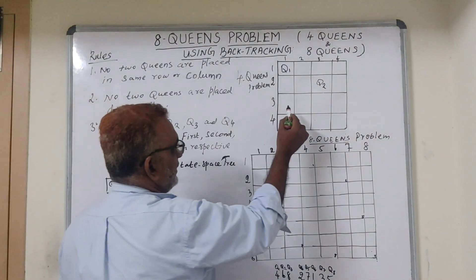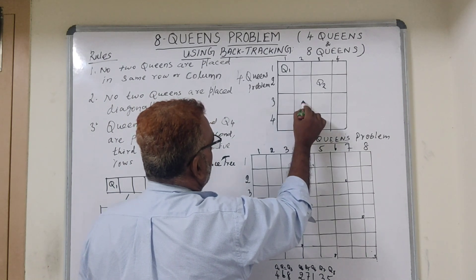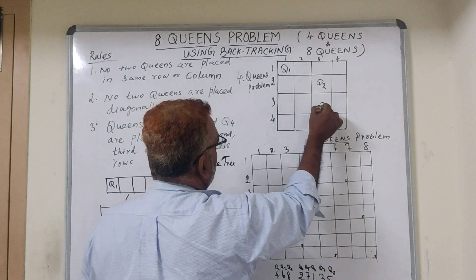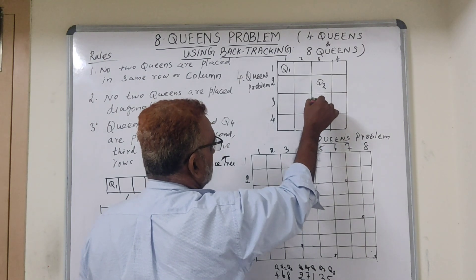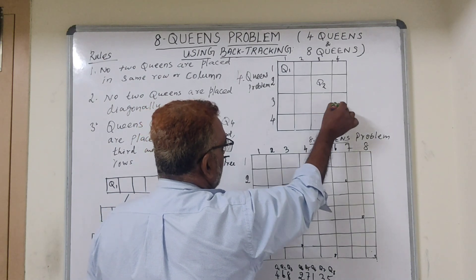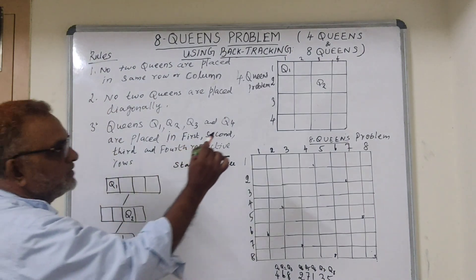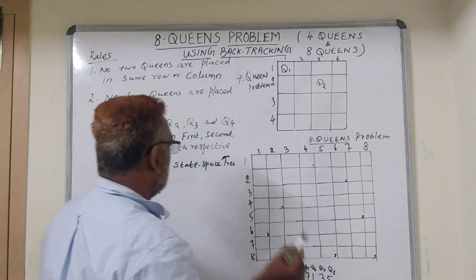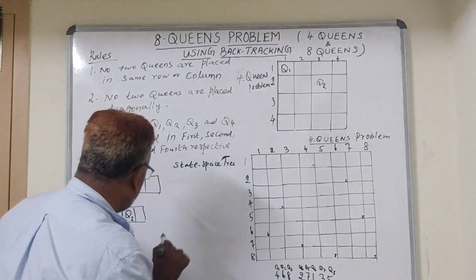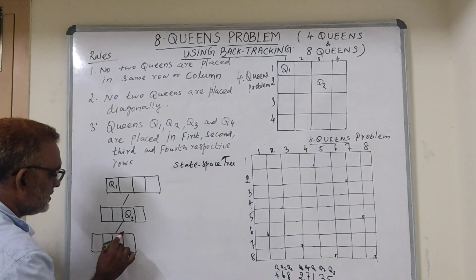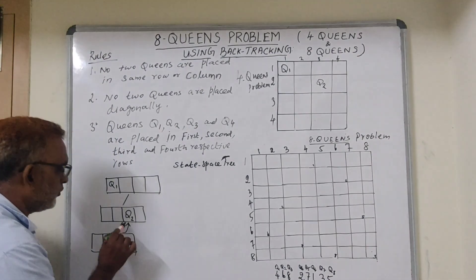Now placing Q3 in the third row. Can I place Q3 in column 1? No. Column 2? It is diagonal to Q2. Column 3? No, same column. Column 4? No, it is diagonal. So Q3 cannot be placed anywhere in row 3. But the rule says Q3 must be placed in row 3. This means we made a mistake in the previous decision — this is what is called backtracking.